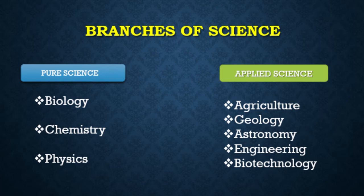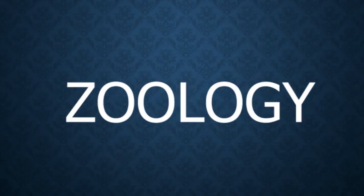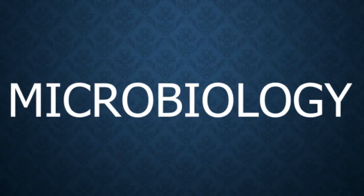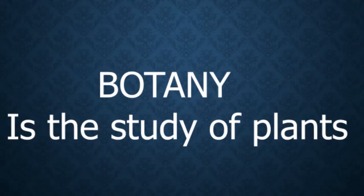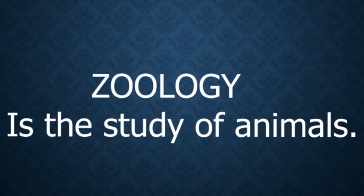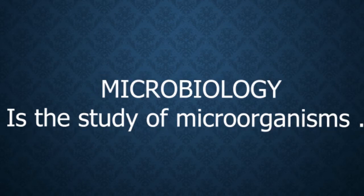Chemistry is the study of composition of matter and its existence. Biology is subdivided into three main branches: botany, zoology, and microbiology. Botany is the study of plants, zoology is the study of animals, and microbiology is the study of microorganisms and their effect on the environment.